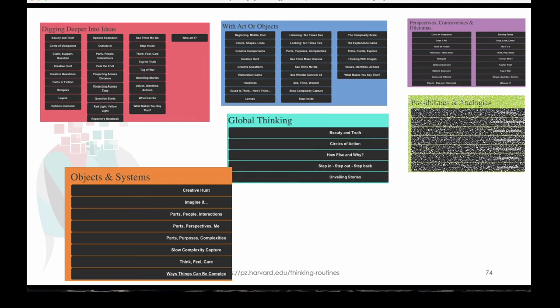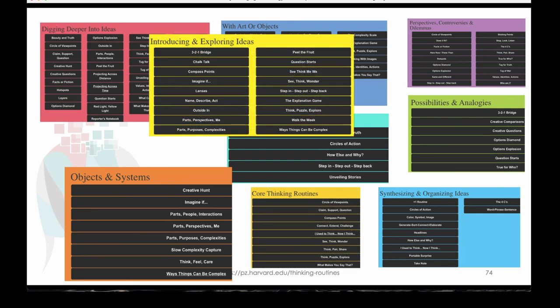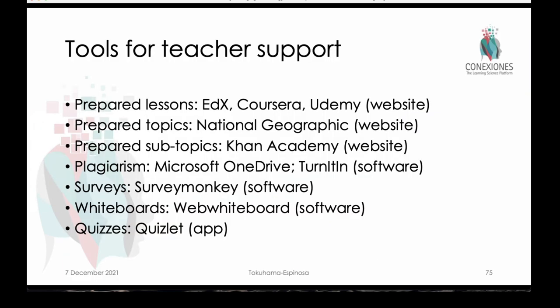There are other tools that give teachers a place to lean on if they need extra help differentiating evaluation activities. There are prepared lessons, topics, and subtopics that already exist — for example, Khan Academy breaks down the concept of calculus into multiple sub-areas with shorter videos to develop particular sub-skills. There's also software to help save time for checking plagiarism, designing surveys, or creating quizzes.